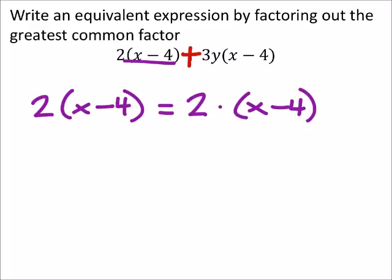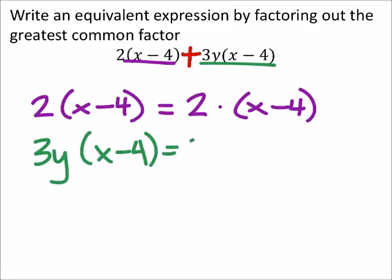And this other term we'll put in green. So this is 3y times x minus 4. 3 is prime already, so I've got 3 times y times, again, x minus 4.